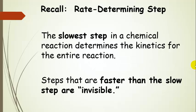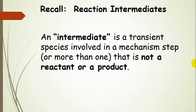The slowest step in a chemical reaction determines the kinetics for the entire reaction — it controls the rate — and we call it the rate-limiting step or the rate-determining step. Elementary steps that are faster than the slow step are invisible as far as the overall kinetics of the reaction. An intermediate is a transient species involved in one or more mechanism steps that is not a reactant or a product, so it's only present for a short period of time.